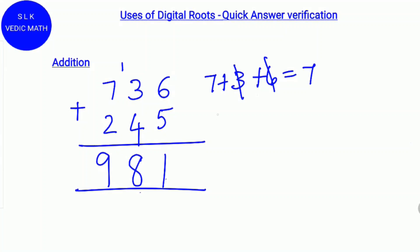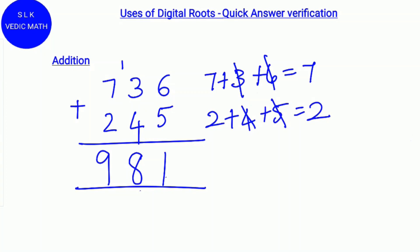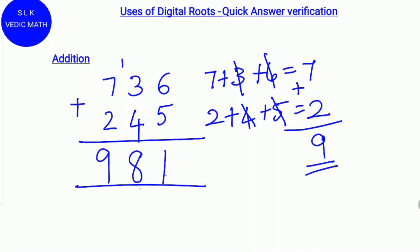To find the digital root of 245: 2 plus 4 plus 5. Since 4 and 5 add up to 9, we cross them out. The remaining digit is 2, so the digital root of 245 is 2. Next, add 7 and 2. So 7 plus 2 is 9. The digital root for the answer 981 is also 9, so the answer is correct.